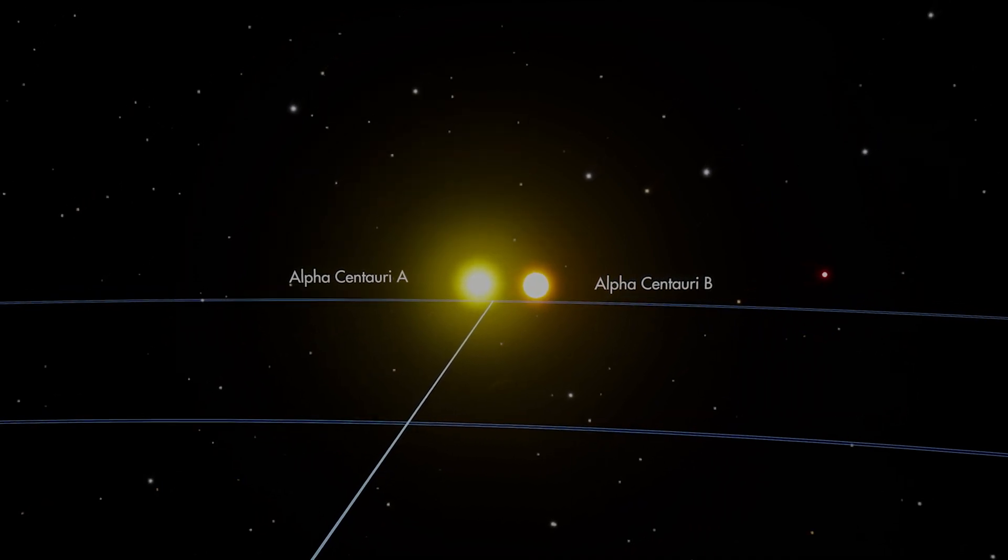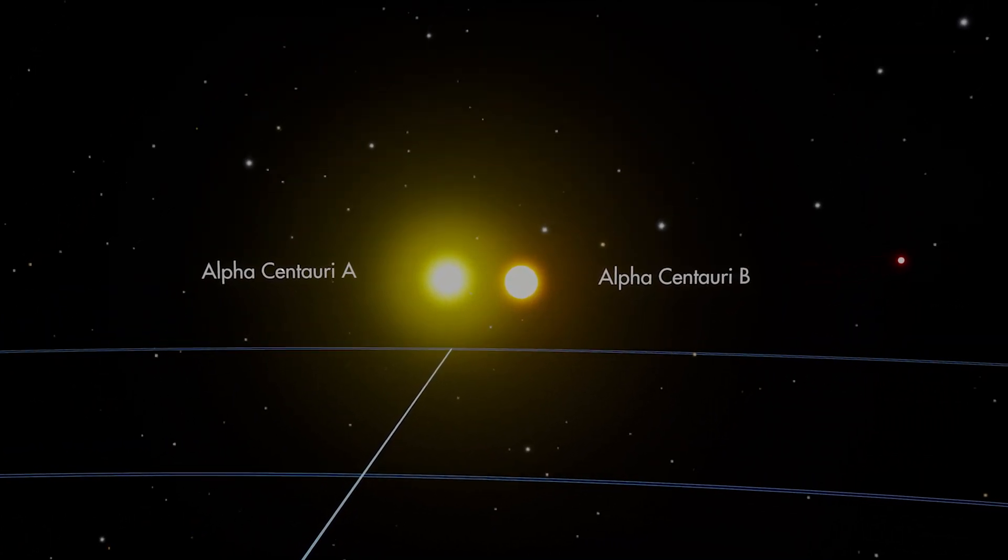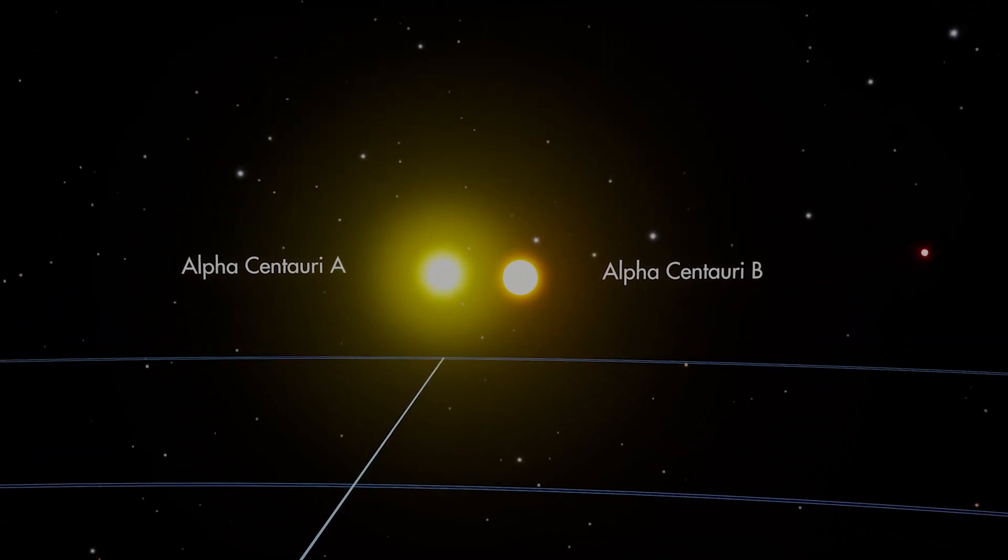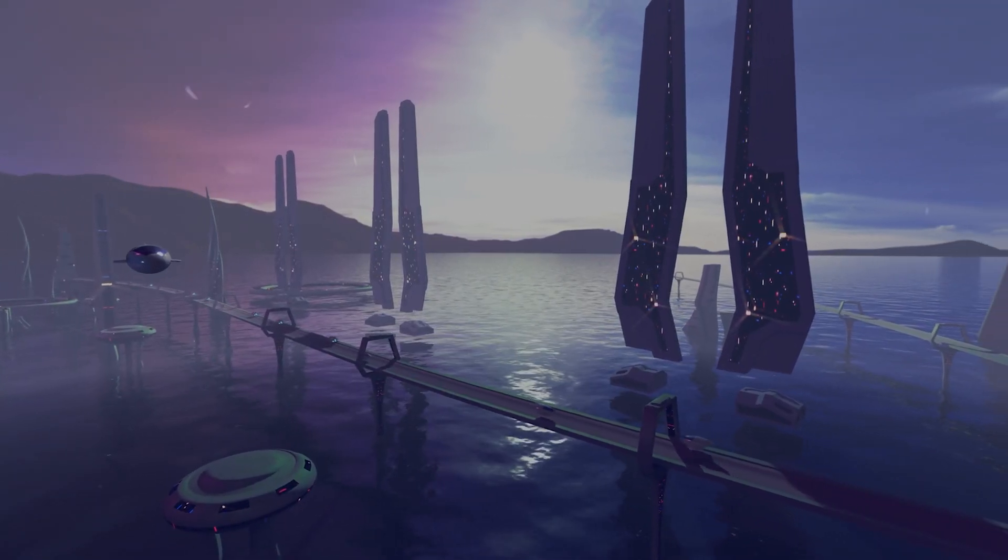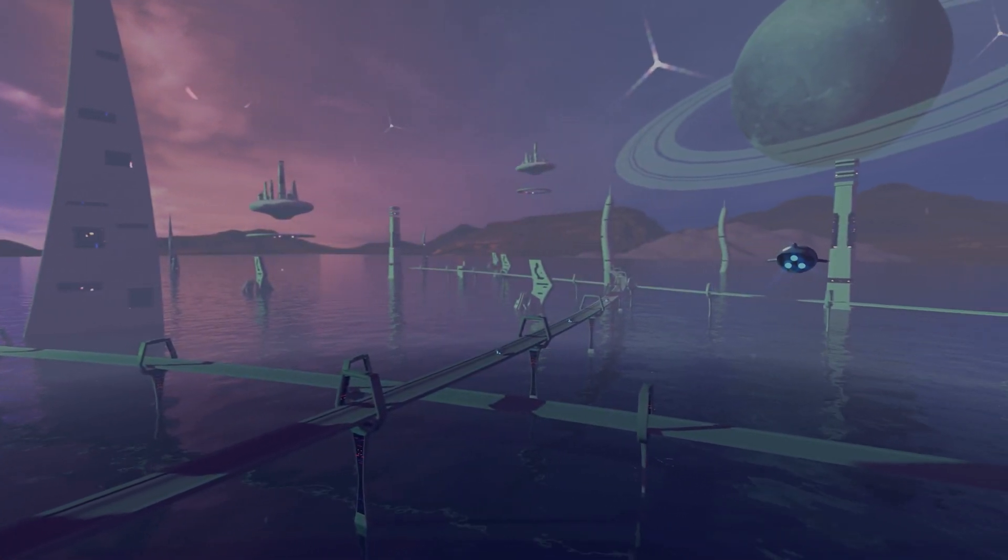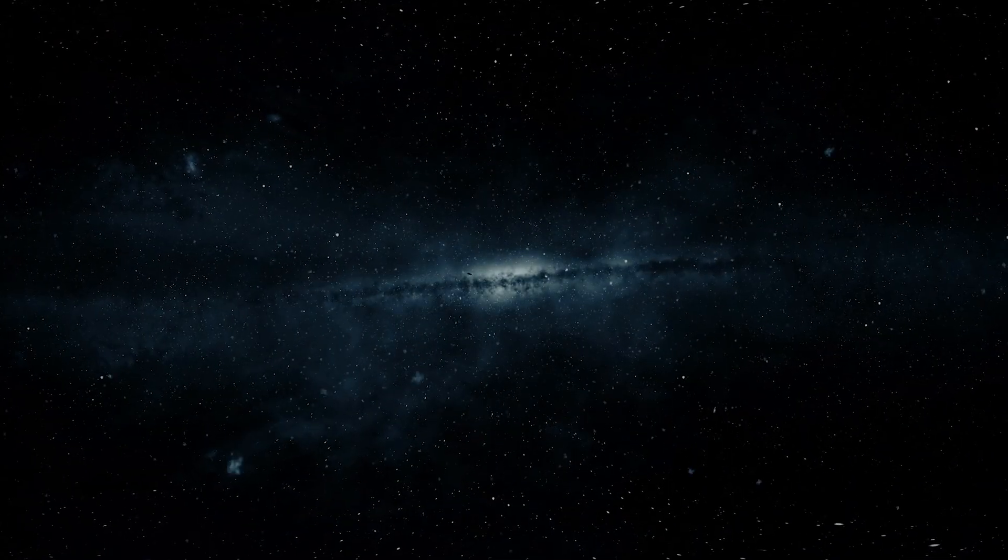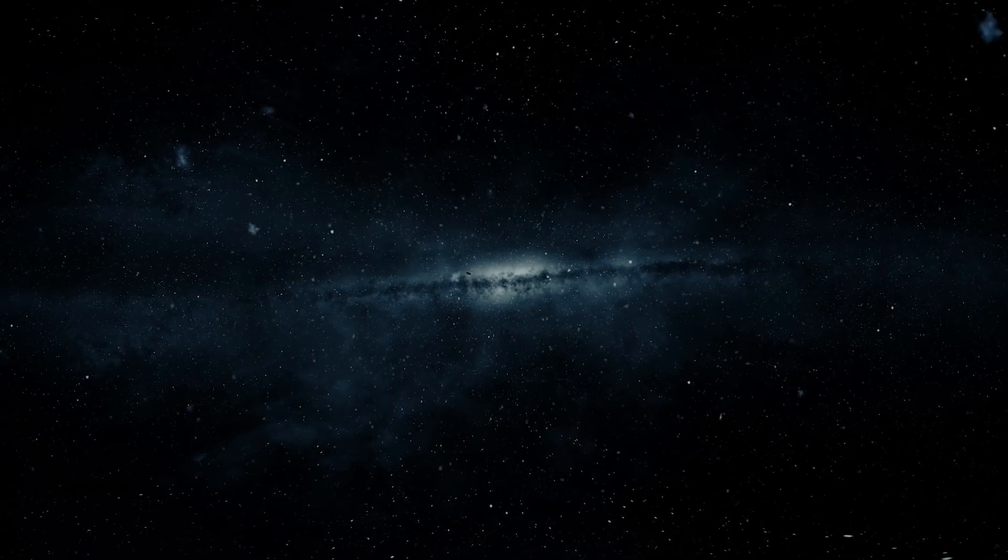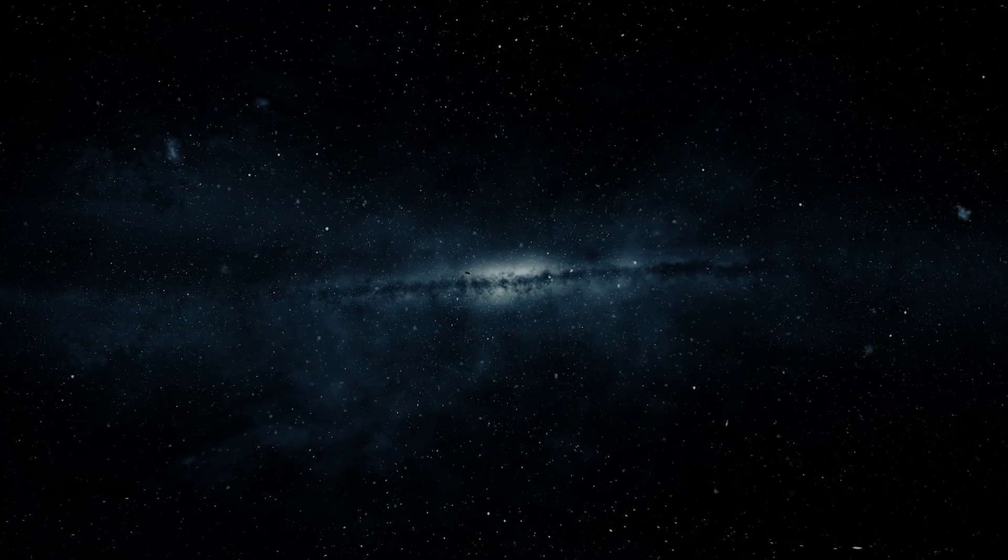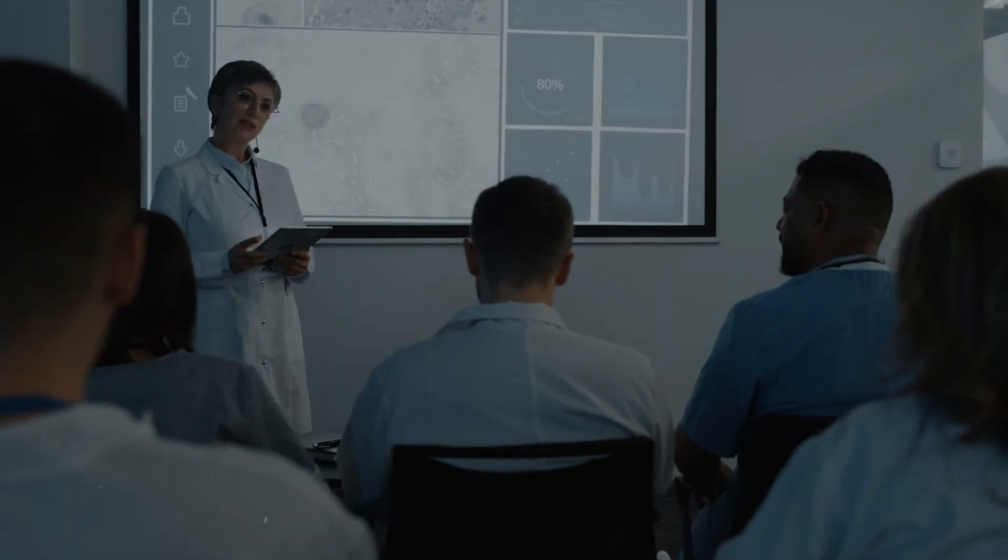Recent observations have raised questions. Could the lights seen on Proxima Centauri b be signs of advanced alien civilizations? While natural phenomena could also explain these lights, their presence has sparked a lively debate among scientists and enthusiasts alike.